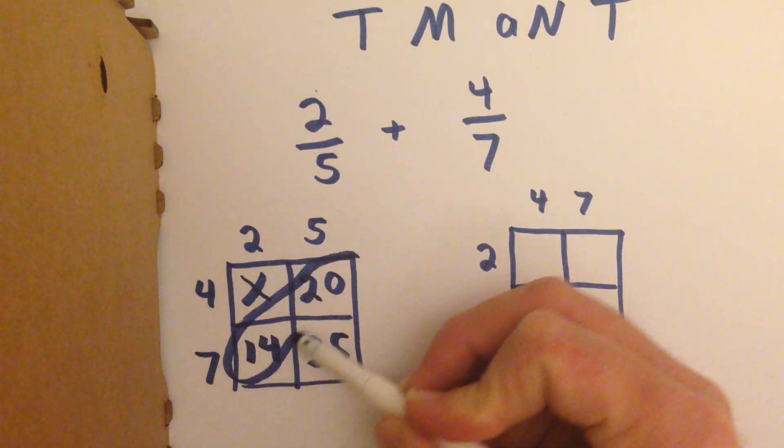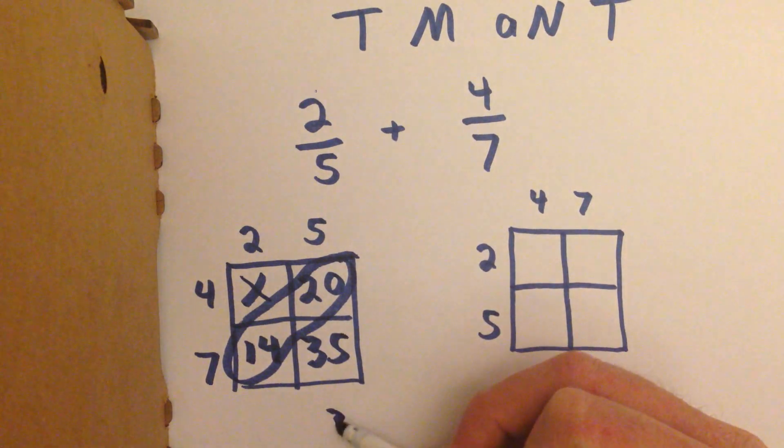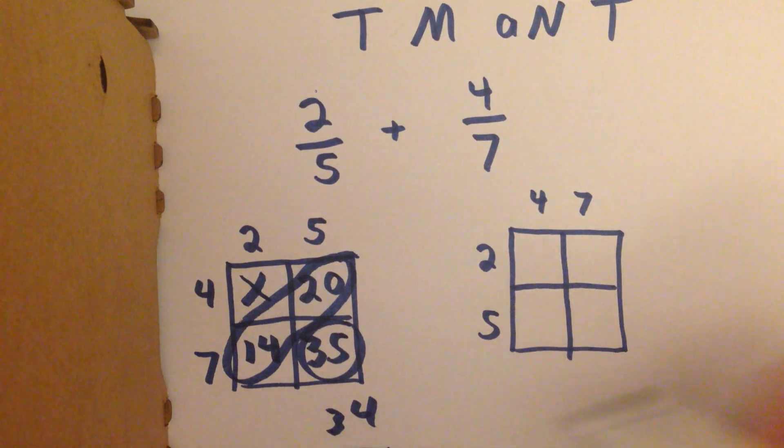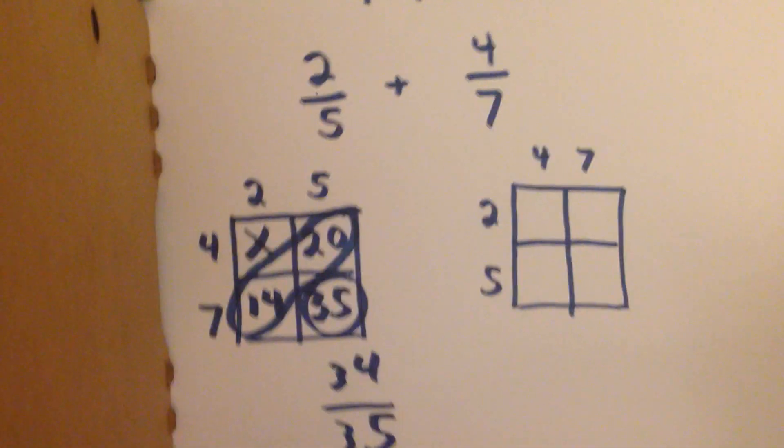And then we add along the diagonal, that's 34. And this one is our denominator, over 35.